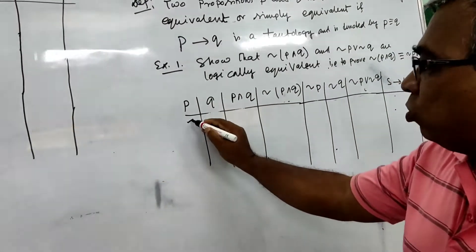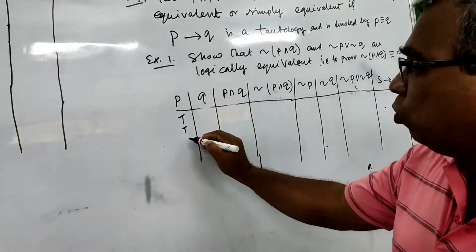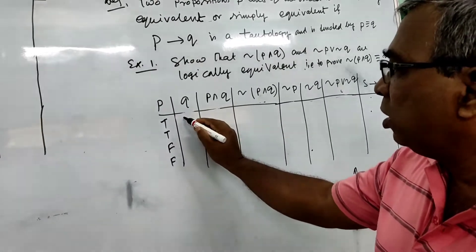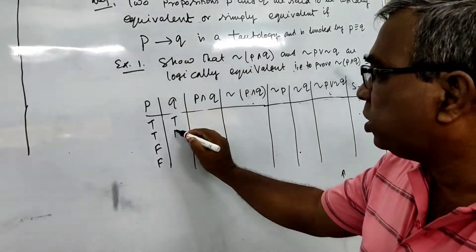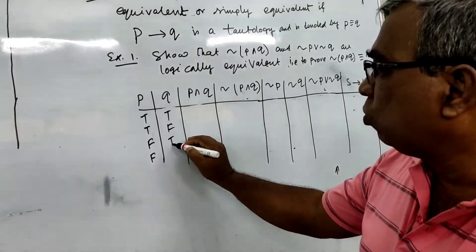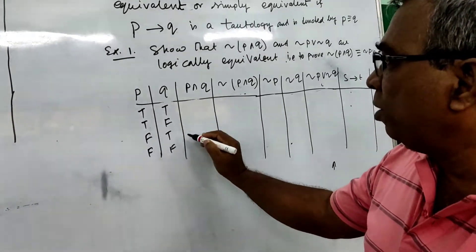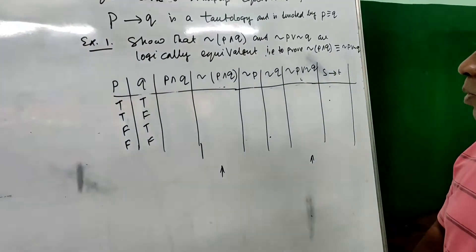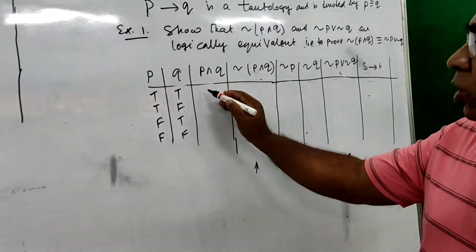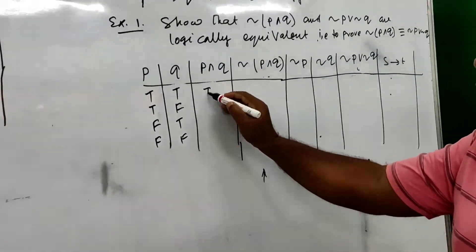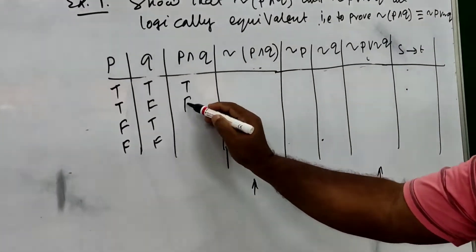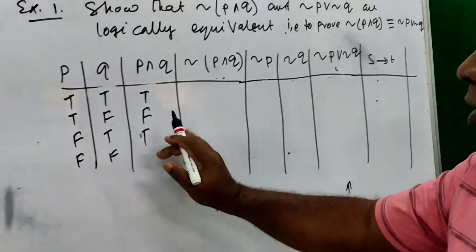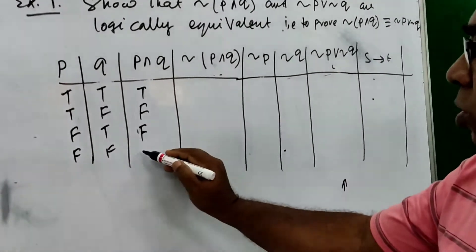Here P and Q are there. The values are: true, true; true, false; false, true; false, false. For P conjunction Q: when both are true it is true, otherwise false. So the column gives: true, false, false, false.